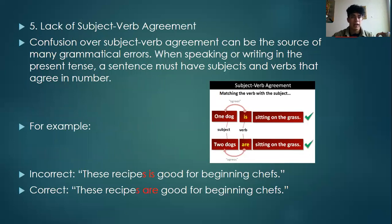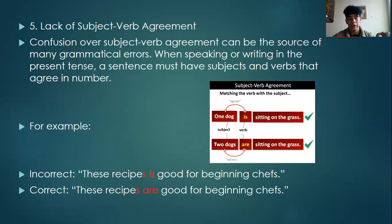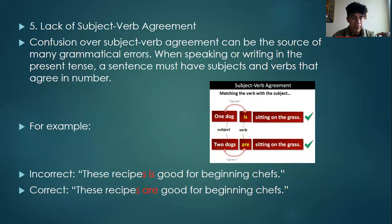Okay, the next example is the lack of subject-verb agreement. Confusion over subject-verb agreement can be the source of many grammatical errors. When speaking or writing in the present tense, a sentence must have subjects and verbs that agree in number. A good solution is: if the subject is singular, the verb must be singular; if the subject is plural, the verb must be plural as well. The incorrect way is "this recipe is good for beginning chefs" — this is not correct because "recipes" is plural and the verb must be plural too. The correct way is "these recipes are good for beginning chefs."